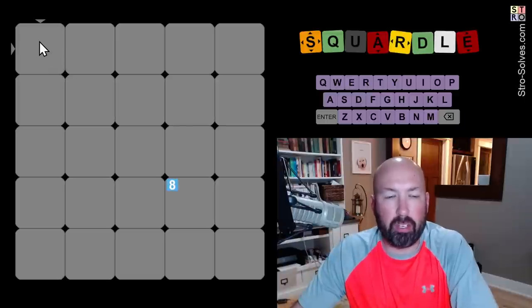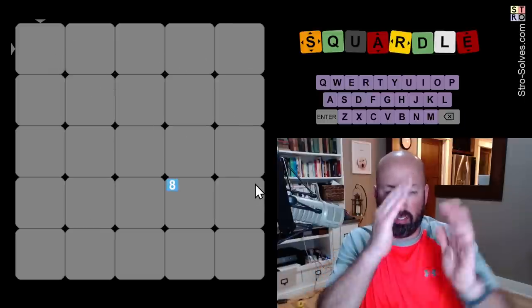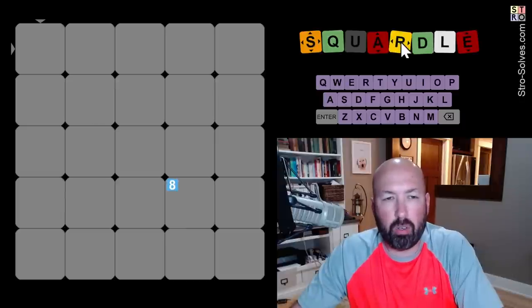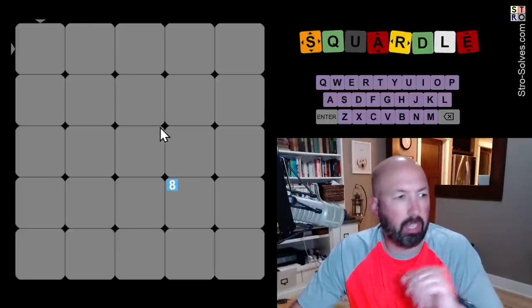All right, so if you're not familiar with Squaredle, basically we're just guessing 10 words in a sort of crossword type grid. And the colors in the logo over here should help you figure out what the clues mean. So red means it's in the column, yellow means it's in the row, orange means it's in the row and the column.